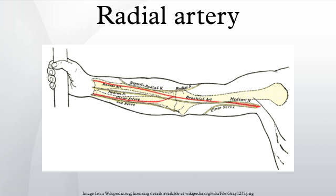The named branches of the radial artery may be divided into three groups, corresponding with the three regions in which the vessel is situated. In the forearm: the radial recurrent artery arises just after the radial artery comes off the brachial artery, and travels superiorly to anastomose with the radial collateral artery around the elbow joint.